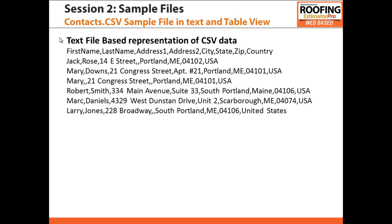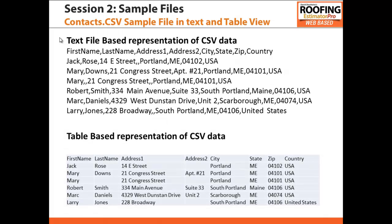It is important to note that each row contains the same number of fields, and when a field is empty, there will be two consecutive commas that denote no value in that position, as can be seen for some records which do not contain a second line in their address. This file may be human readable, but it is nonetheless not too easy on the eyes. Here is a table-based representation of the same exact CSV data as it would be rendered when the CSV file is opened in Microsoft Excel. Note that there are still blank values in certain address 2 fields, and also that the third data record does not have a value in the last name column.